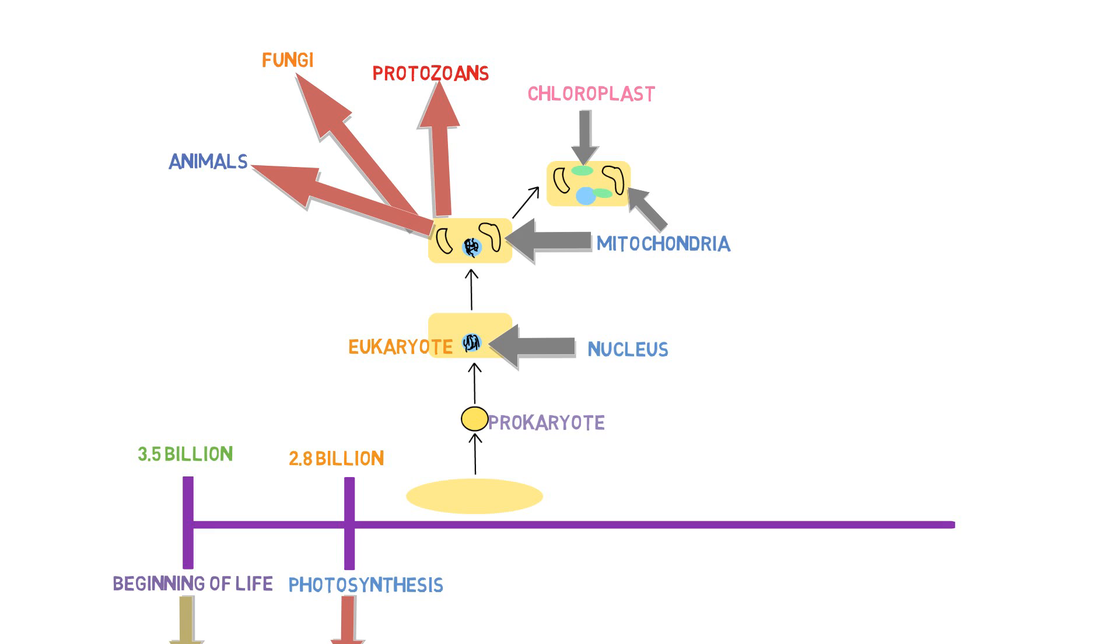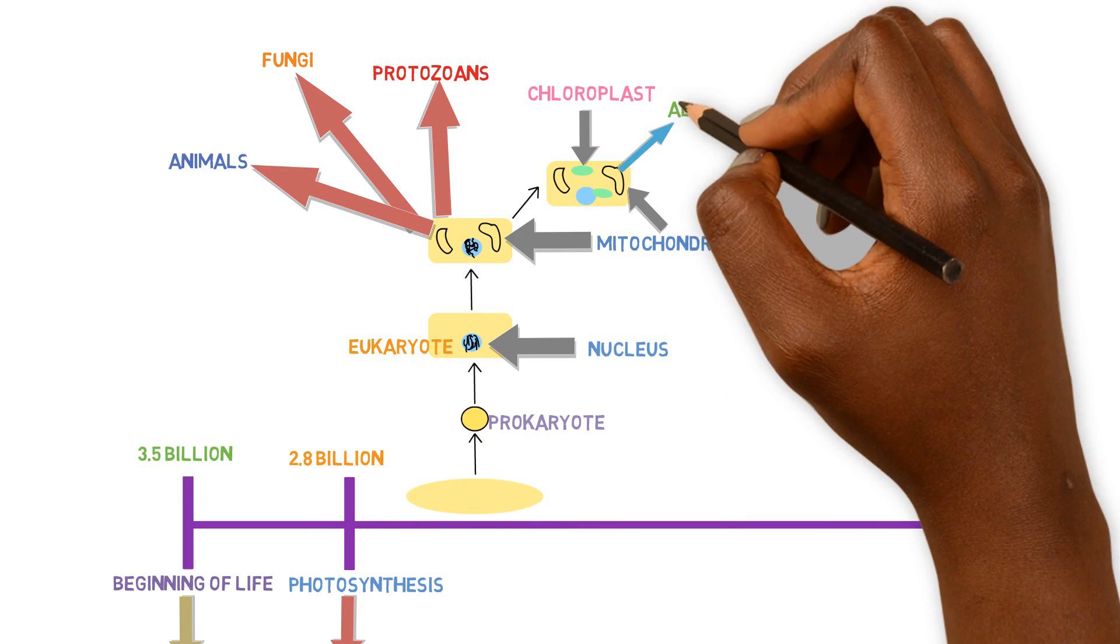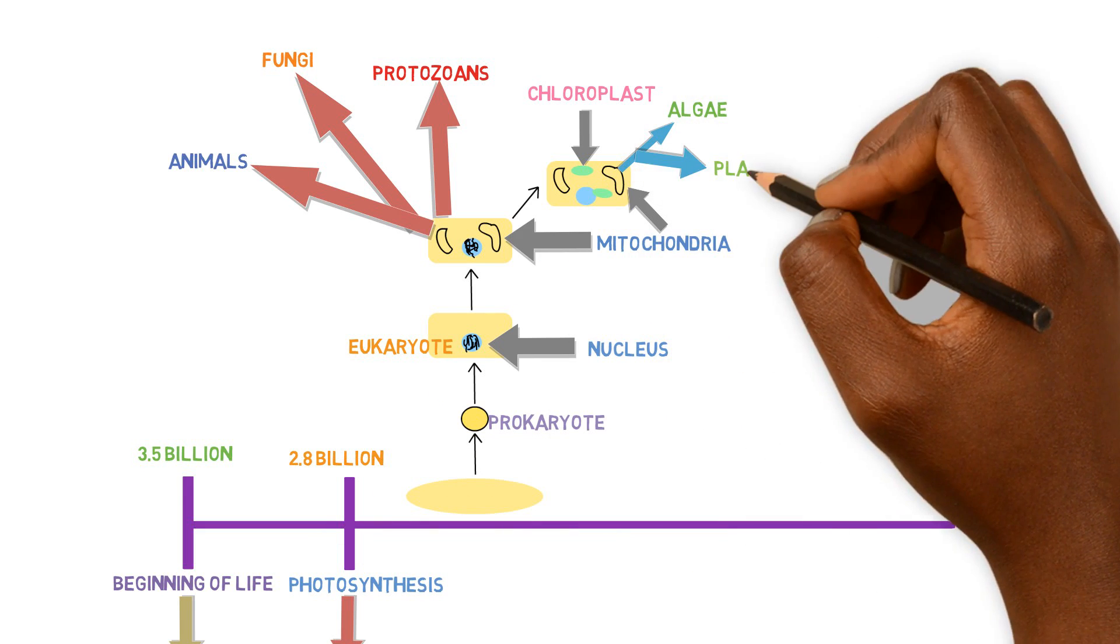Whatever the environment was, it was more suitable to not have chloroplasts. It was more beneficial to not have chloroplasts, which ended up developing into animals for a reason. Eukaryotic cells that had chloroplasts developed and evolved into algae and plants.